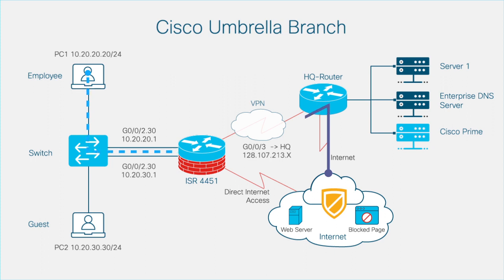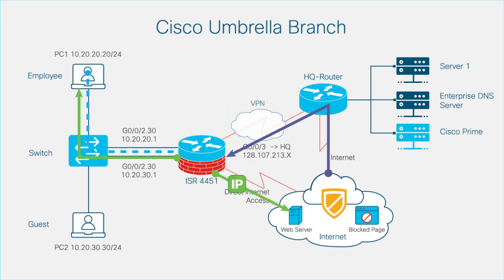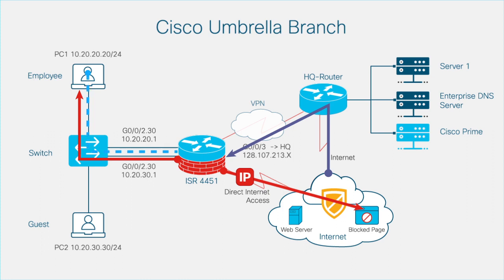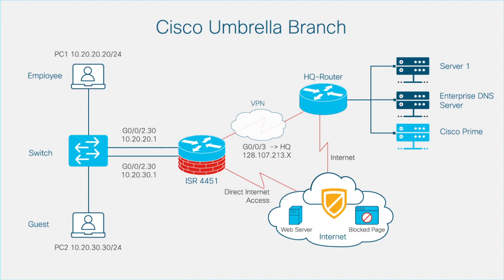When the response is sent from the DNS server, the ISR 4451 decrypts the packet and forwards it to the client. For any approved content, the response contains the destination IP address of the web server. However, for any blocked content, the response will contain the IP address of the blocked page. For any suspicious content, the response will contain the Intelligent Proxy unicast IP addresses. Note that you can enable or disable Intelligent Proxy in the Umbrella dashboard.